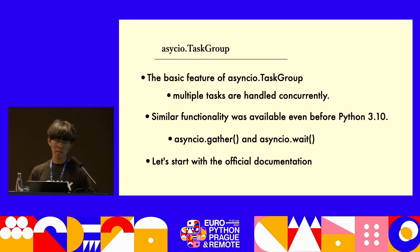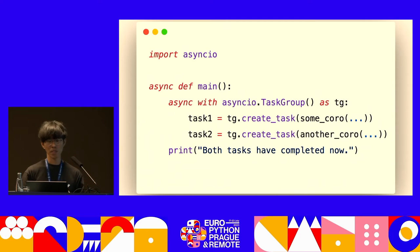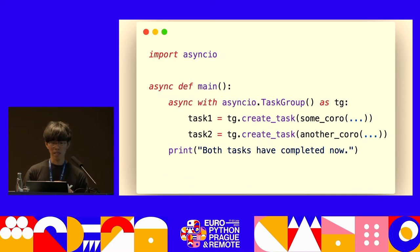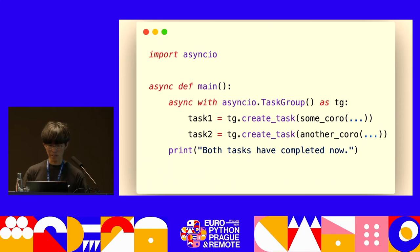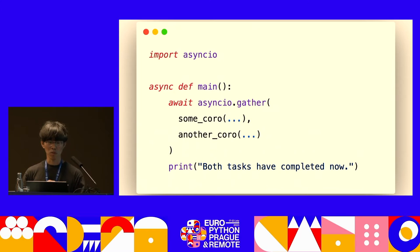Similar functionality was available even before Python 3.10, such as AsyncIO gather or async/await. Let's start with the official document. AsyncIO Task Group uses the context manager to run multiple tasks at the same time. In this example, it runs the asynchronous functions some_coro and another_coro at the same time. The tasks are finished when the context manager exits. However, you can also do this with Python 3.10 using AsyncIO gather — that actually looks simpler. So what makes AsyncIO Task Group special?